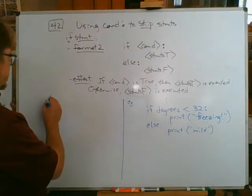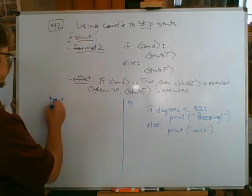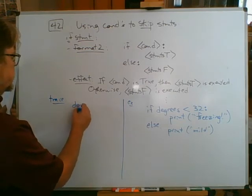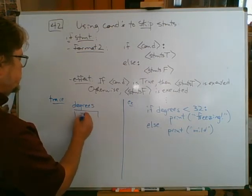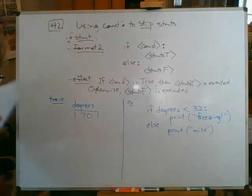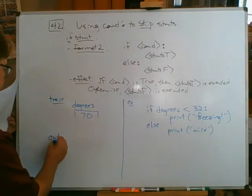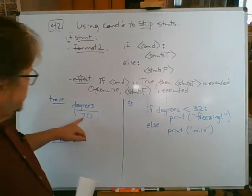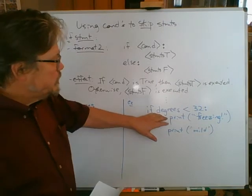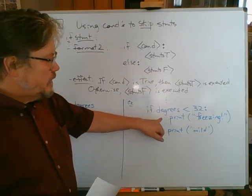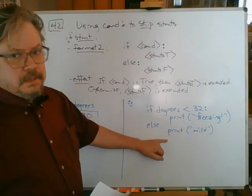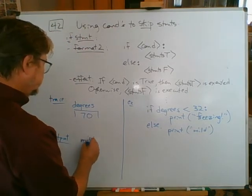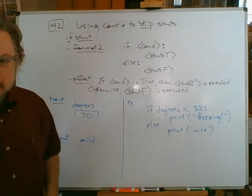And we could do fast and nasty trace over here. Let's say when we get to those statements degrees is a balmy 70. What's the output going to be? Well, let's see. If degrees less than 32, it isn't less than 32. So it's going to skip over the true part. It skips over the true statements because the condition is not true. But it cannot skip the else part. It's got to do one or the other. So it's going to print out mild.